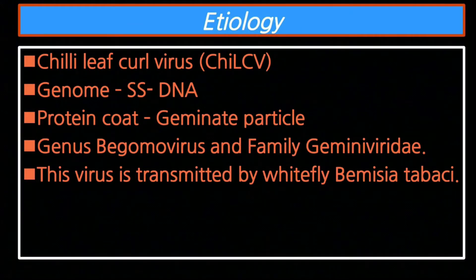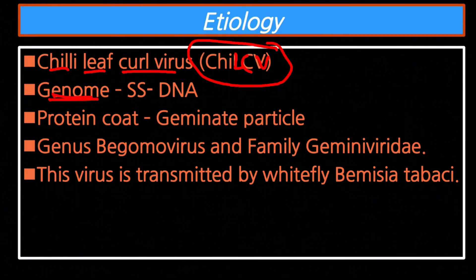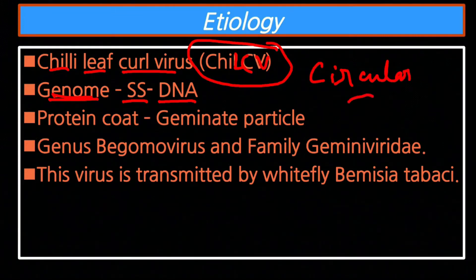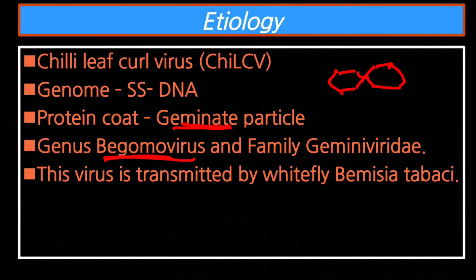अब देखते हैं etiology — causal organism कैसा दिखता है। यह चिली leaf curl virus से होता है, short form में ChiLCV लिखते हैं। इसका genome single-stranded circular DNA होता है। इसका protein coat geminate होता है — दो particle आपस में जुड़े होते हैं। यह genus Begomovirus और family Geminiviridae को belong करता है।